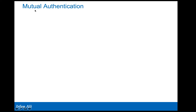Mutual authentication means that when the mobile connects to the network, the network should be able to verify whether the mobile is allowed and confirm its identity. But mutual authentication also means the mobile can verify whether the network serving it is actually its home network. There is also an authentication of the network by the mobile.